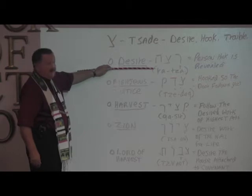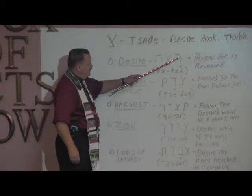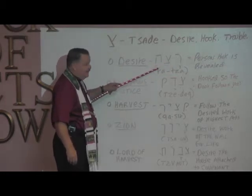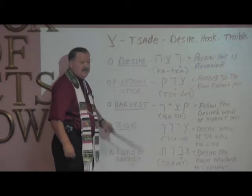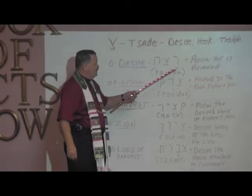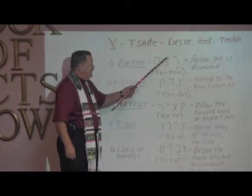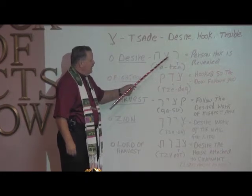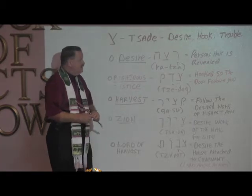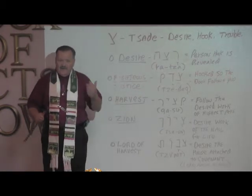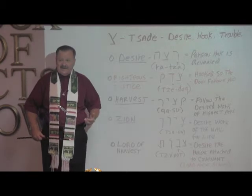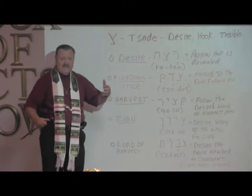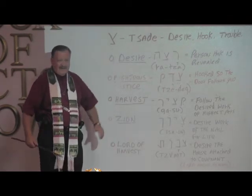The word 'desire' — we have the Resh, the Tsadi, and the He, which means to declare or reveal. Tsadi can mean hook or desire. So the person's hook is revealed. If you have a desire for water and you're in the desert and very thirsty, your desire will be revealed — the person's panting, thirsty, tongue swelling — their desire is revealed, it can be seen.